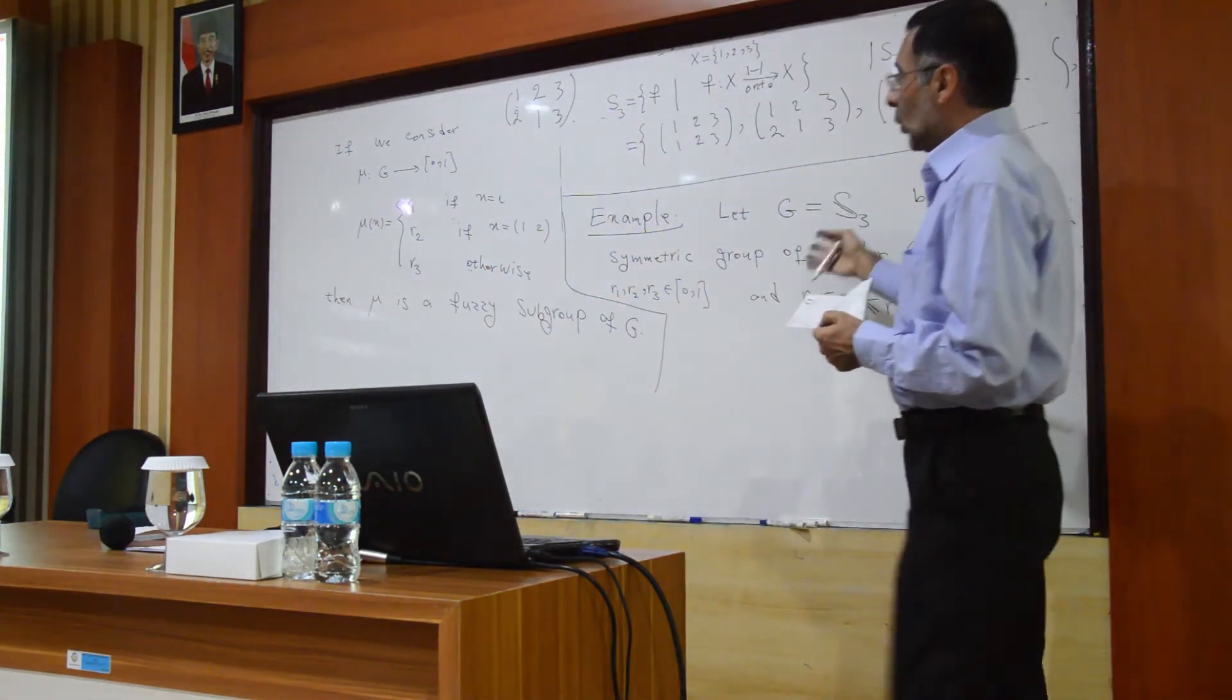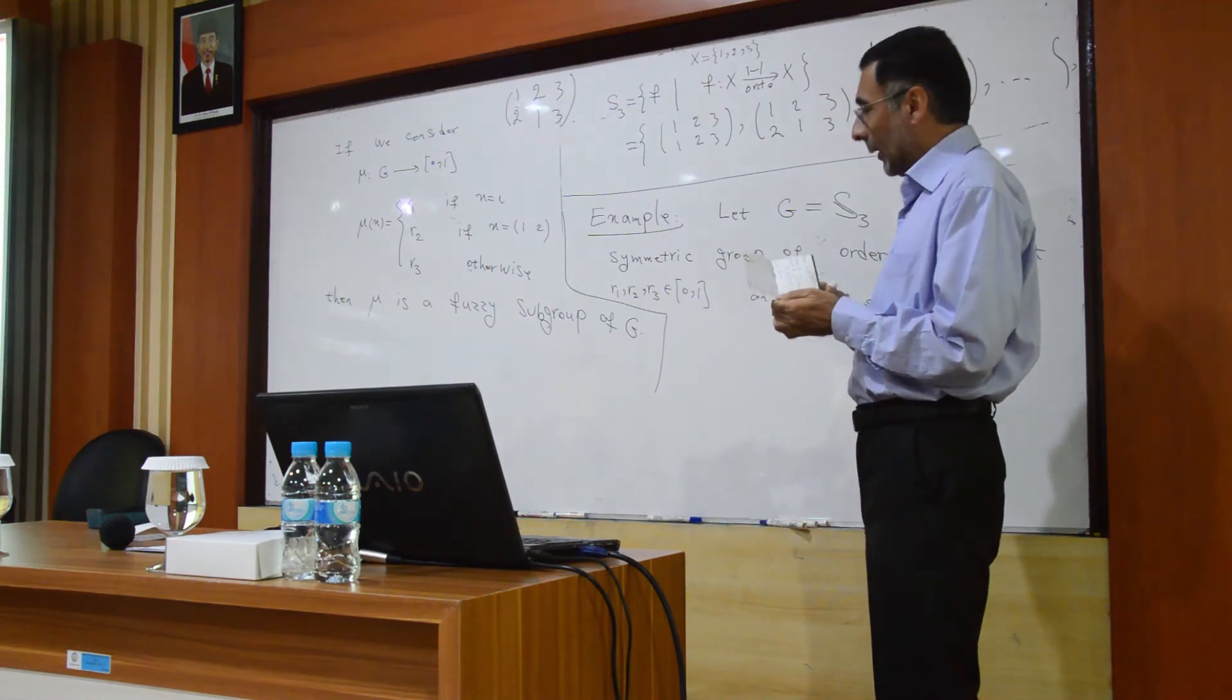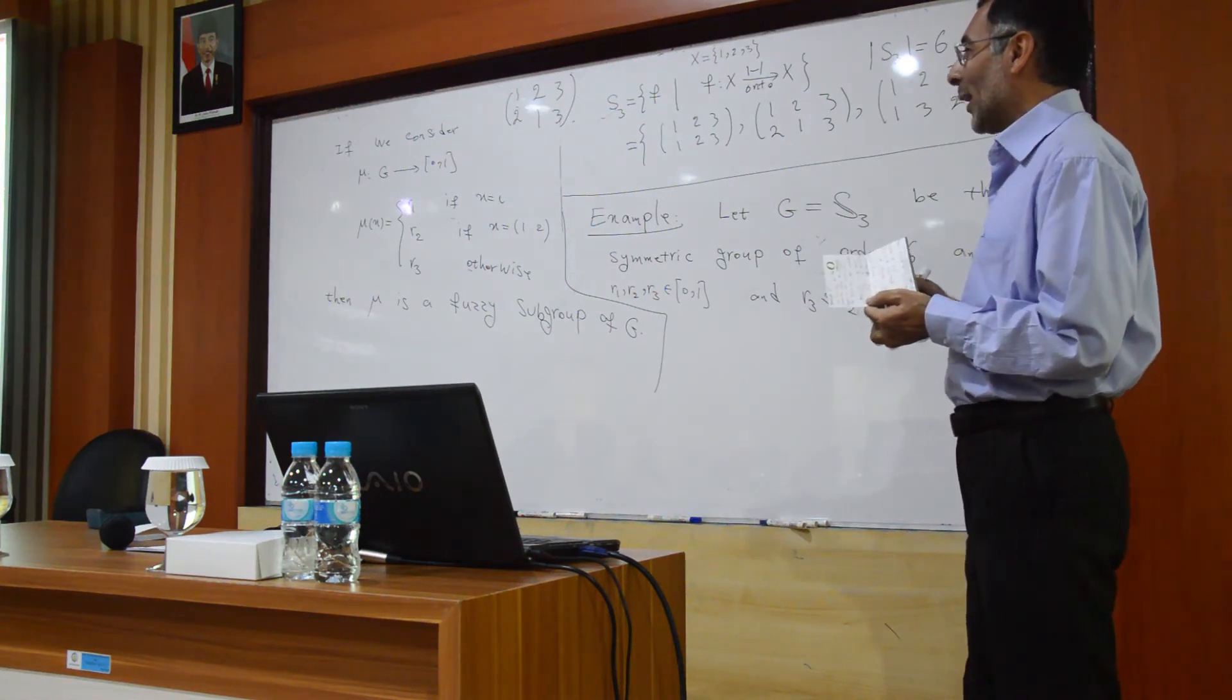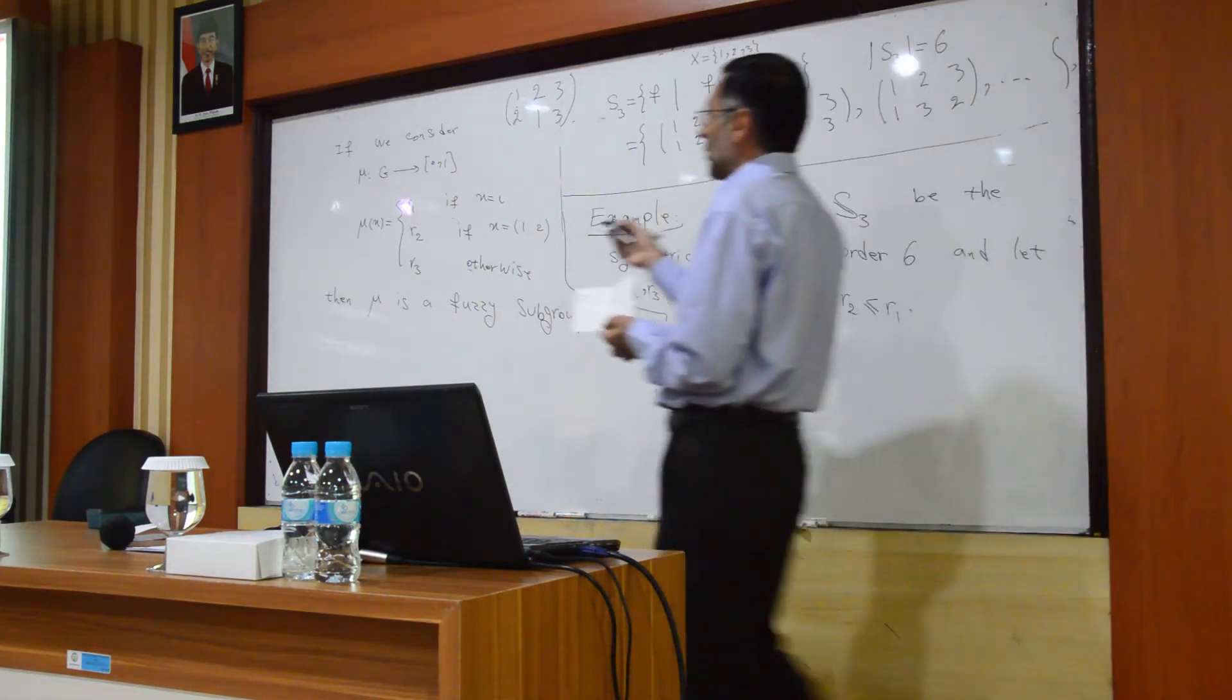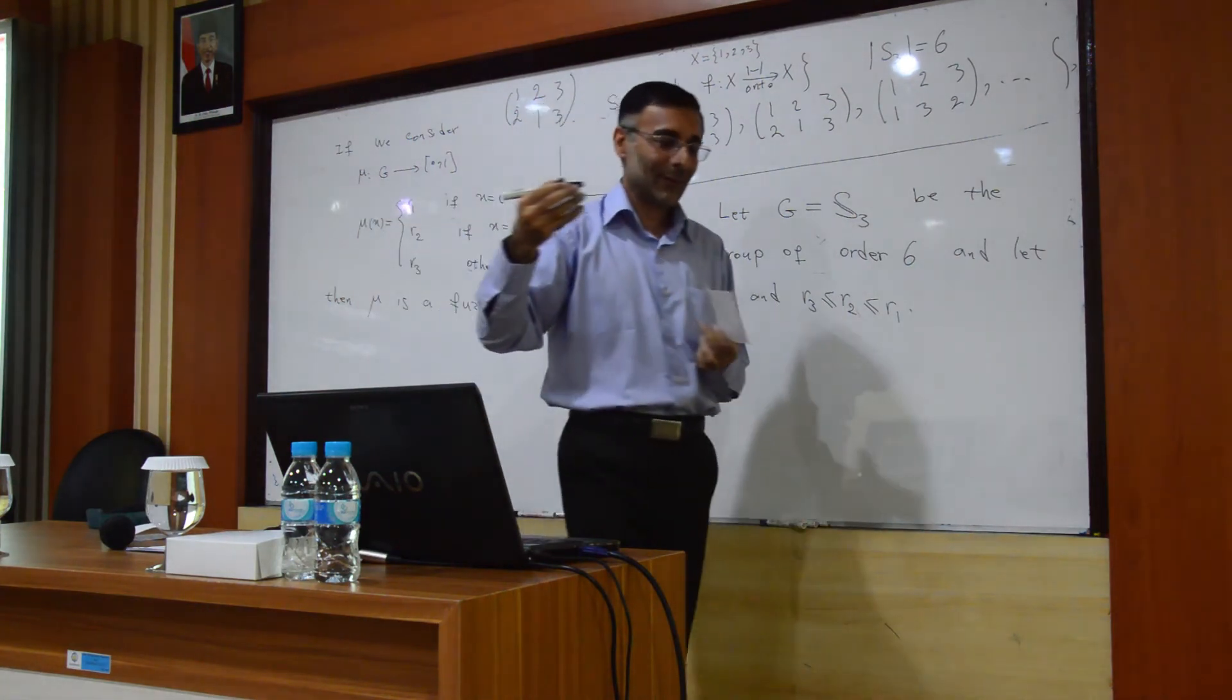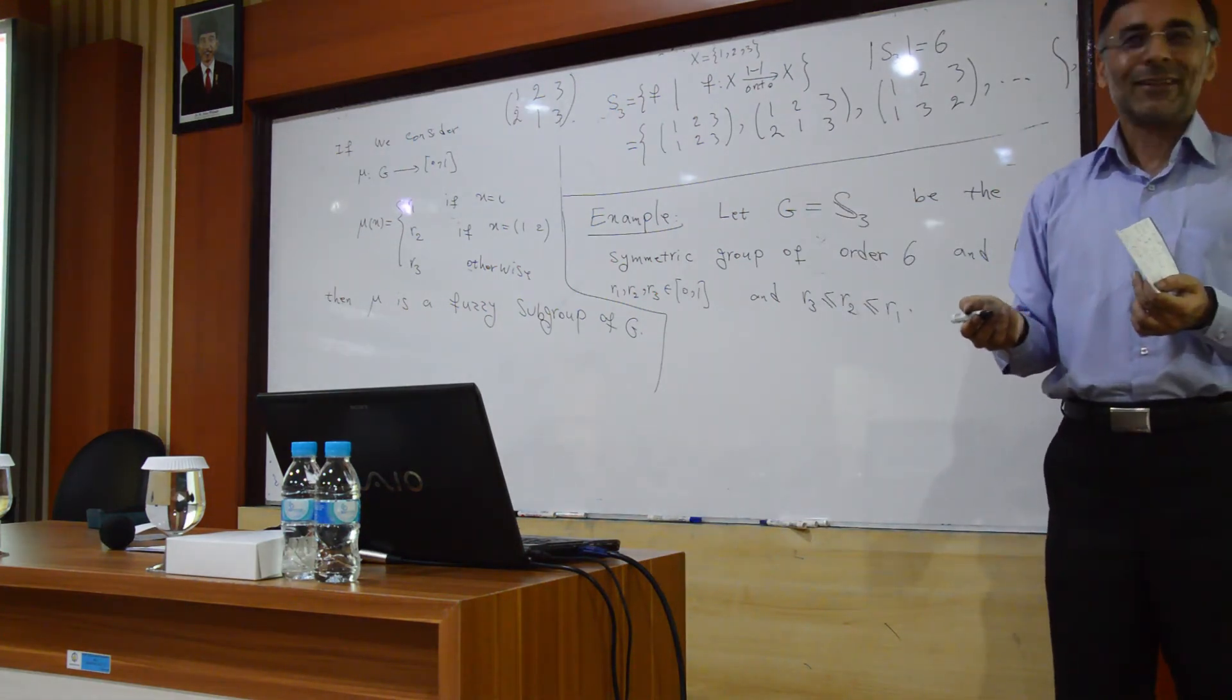For this group, if we consider mu like this, then mu satisfy the axiom 1 and axiom 3. But I hope you don't ask me how we show this function satisfy the first and the second axiom. It is easy, but make many times.